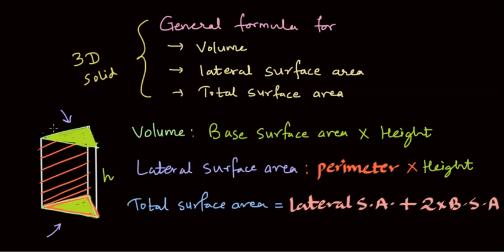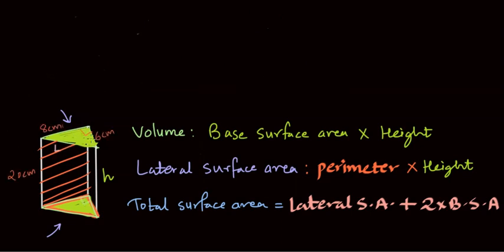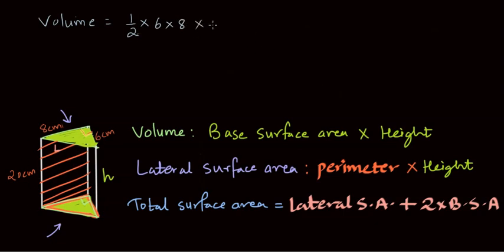Now let's take an example. The sides of the triangular base of the solid are 6 cm and 8 cm, and those sides meet at a right angle. The height of the solid is 20 cm. To find the volume, we apply the area of a triangle formula: half times base times height of the triangle, which is half times 6 times 8, then multiply by the height of the solid, 20 cm. This gives us 480 cubic centimeters.